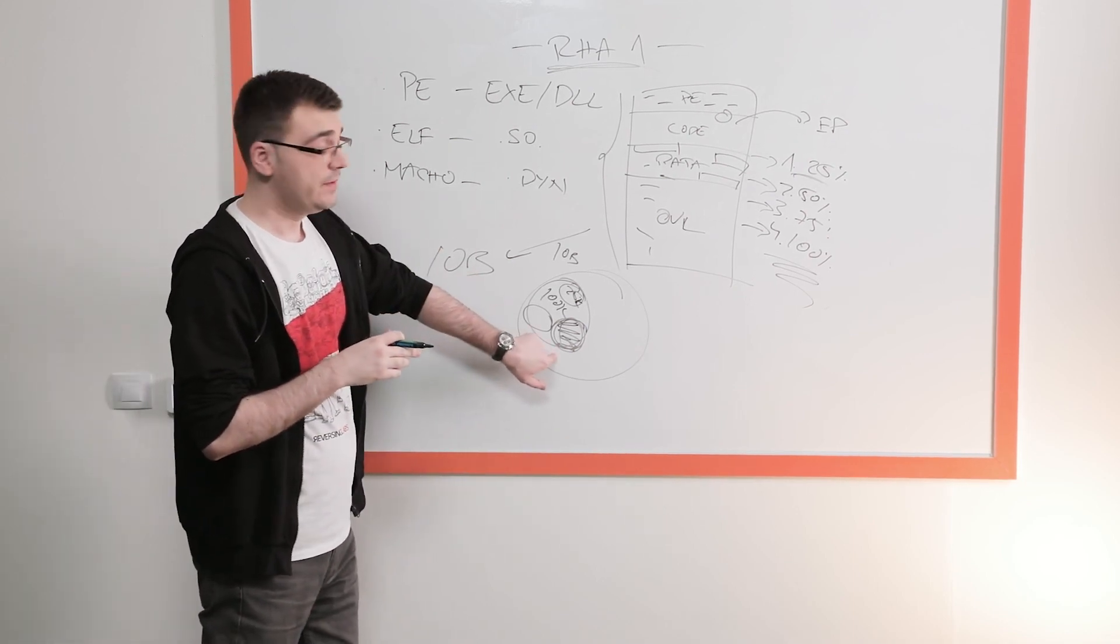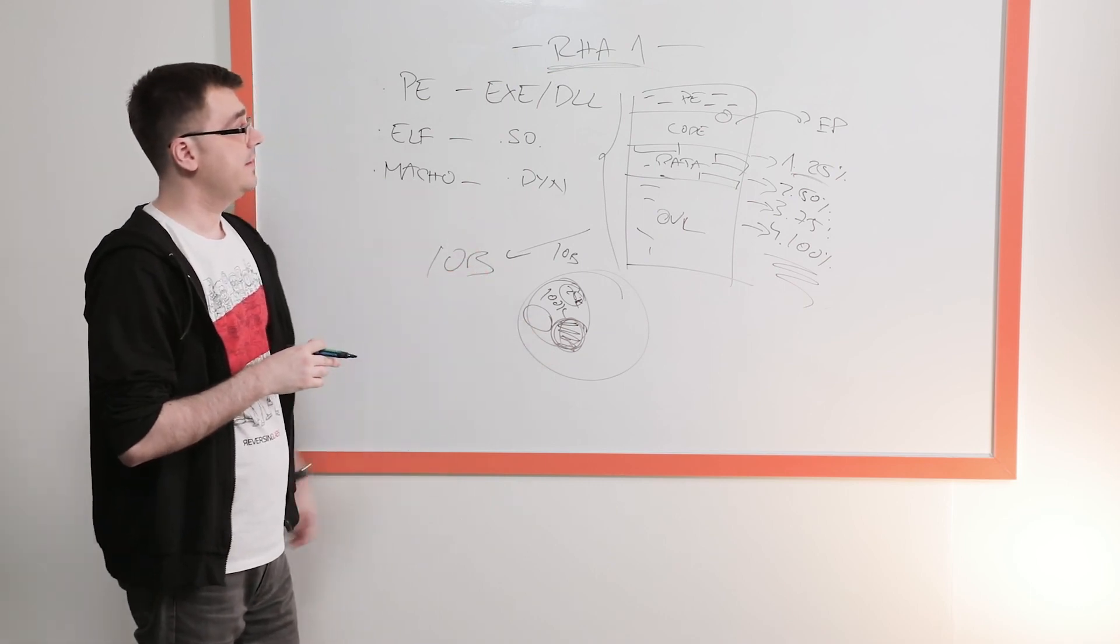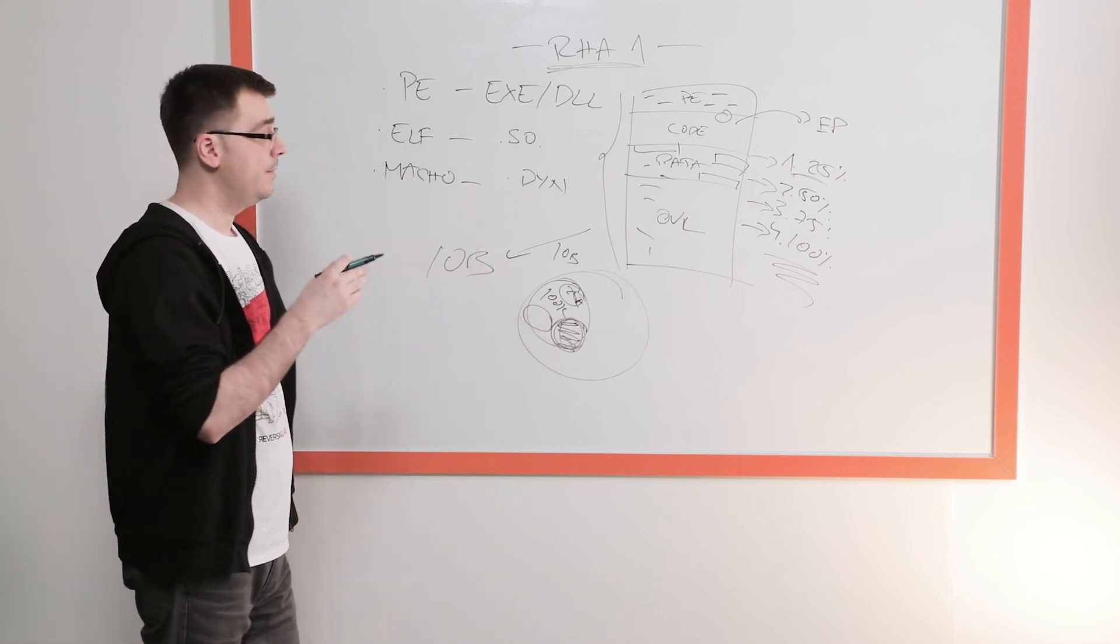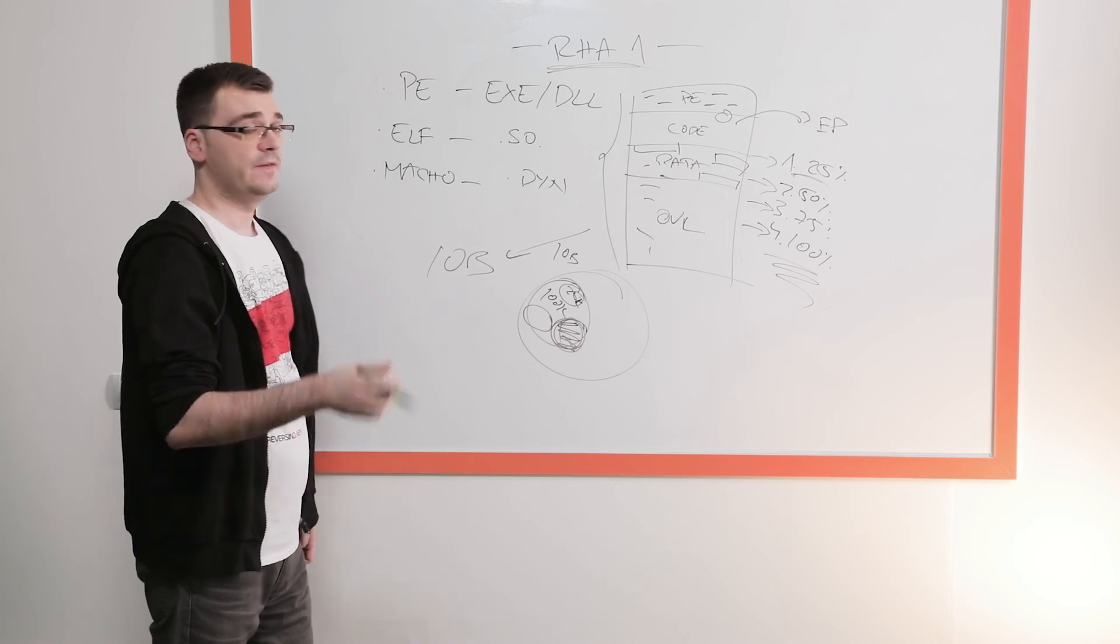Which say if a new binary out there is similar to something we already saw and that particular bucket is exclusively malicious, we can classify that file right away and say by similarity this new file is also malicious.